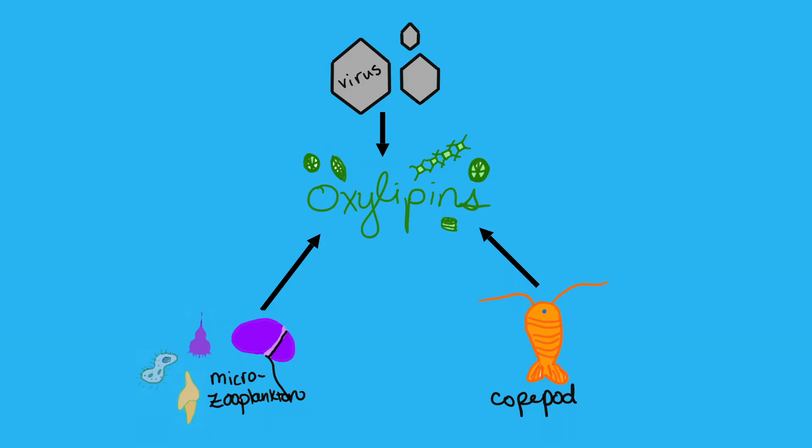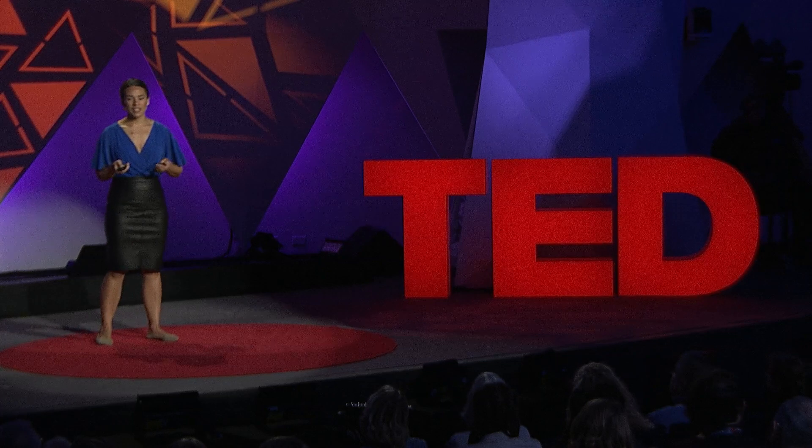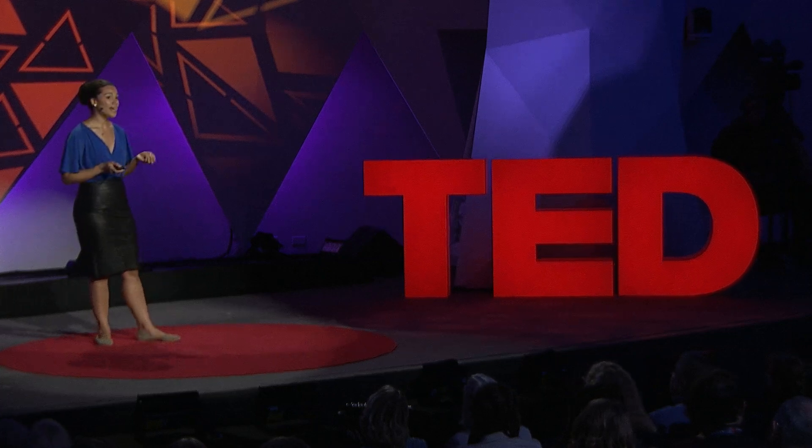For the microzooplankton grazers, oxylipins are inhibitory — they actually decrease the rate at which these zooplankton go around engulfing their prey. In experiments with collaborators, we've fed zooplankton healthy diatoms and we've fed them chronically stressed diatoms that are already producing some oxylipins. What we see is that these single-cell grazers can detect the oxylipins, and they prefer the healthy diatoms 10 to 1.